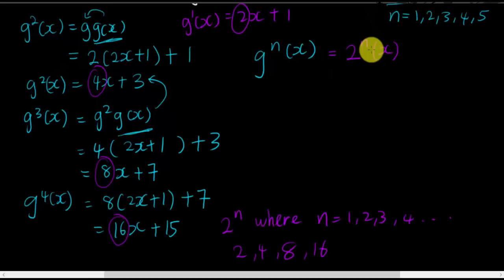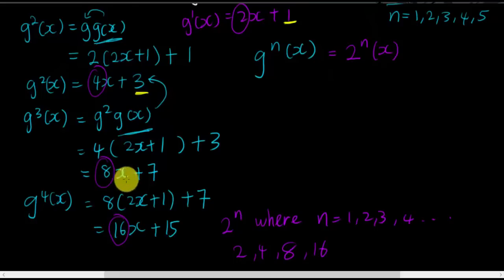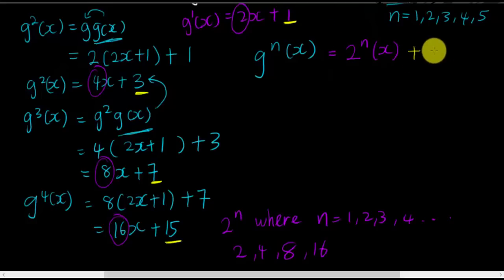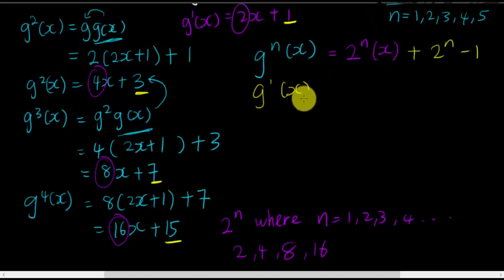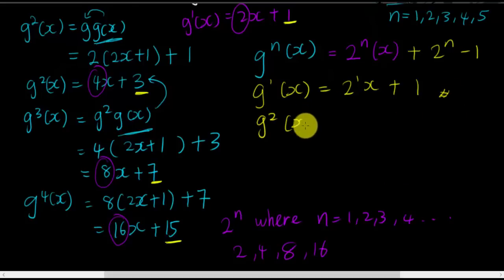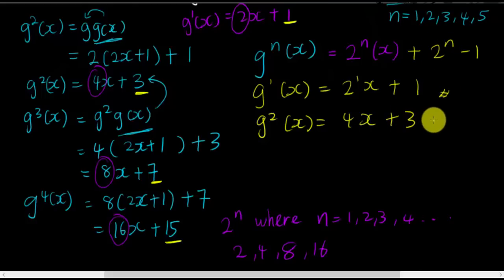Now I need to solve for the constant term. You can find that when the coefficient is 2, the constant is 2 minus 1 = 1. When the coefficient is 4, the constant is 4 minus 1 = 3. When 8, the constant is 8 minus 1 = 7. When 16, the constant is 16 minus 1 = 15. So the constant is always 2^n minus 1.